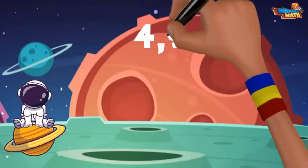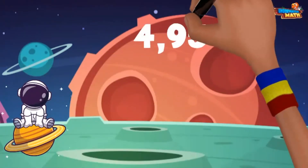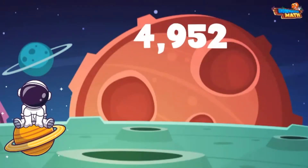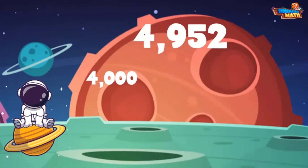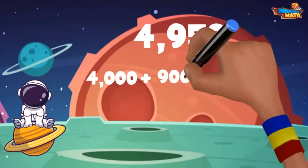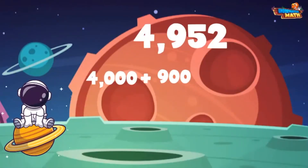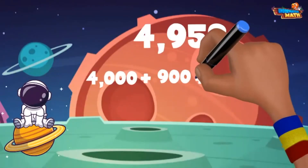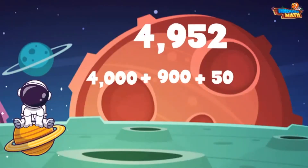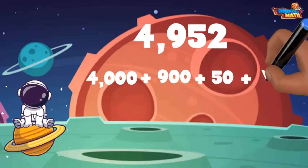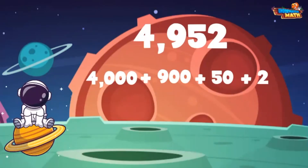This next number is pretty big: 4952. There is a 4 in the thousands place to represent 4000. We can add 900 to represent the 9 in the hundreds place, 50 to represent the 5 in the tens place, and 2 for our 2 in the ones.